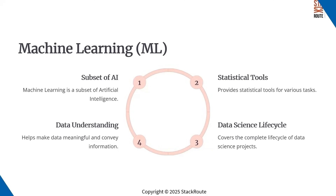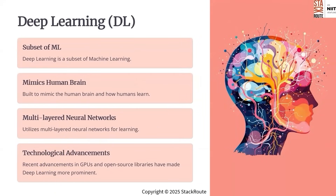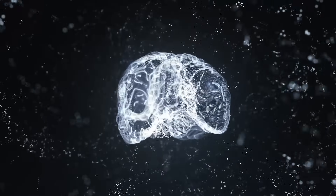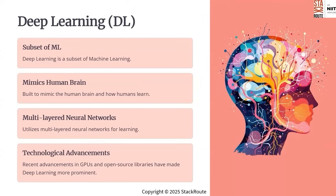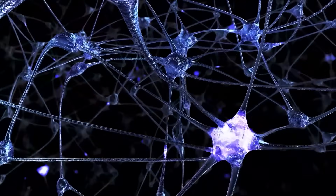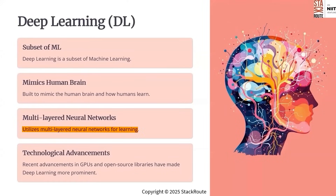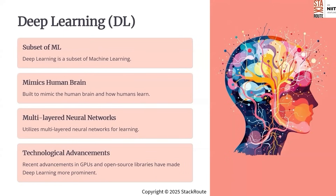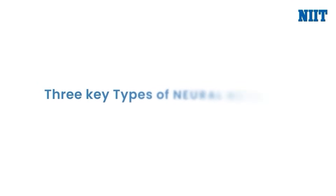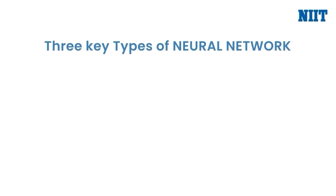Next up is deep learning, or DL. Deep learning is a subset of machine learning and it is designed to mimic how the human brain works. It uses structures called neural networks — specifically multi-layered ones — to learn and make decisions. Though DL is not new, it has gained popularity recently thanks to advancements in technology like GPUs and open source libraries. It is behind some of the most exciting AI applications today. There are three key types of neural networks in DL: ANN, CNN and RNN.